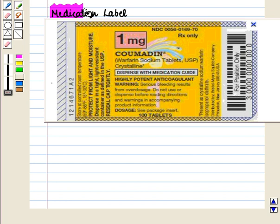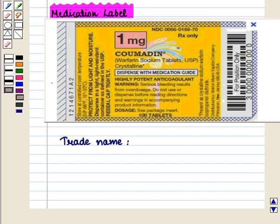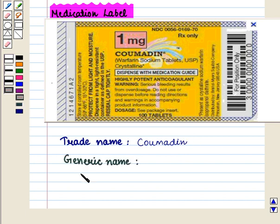Now let us look at a medication label. The trade name is written in bold letters — here the trade name is Coumadin. The generic name is written in lower case letters — here the generic name is Warfarin sodium.